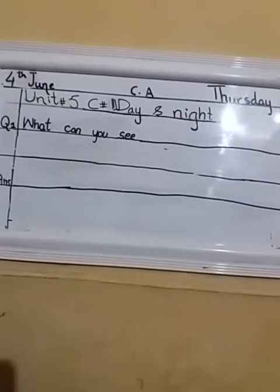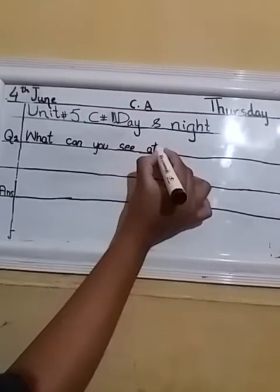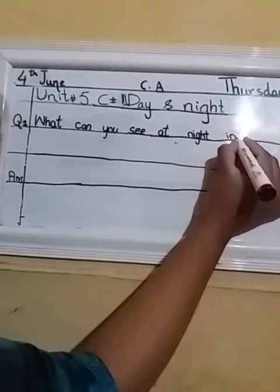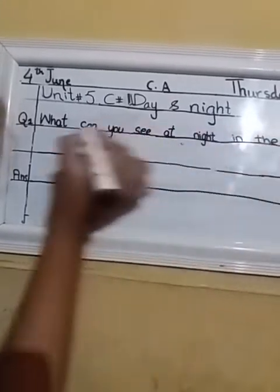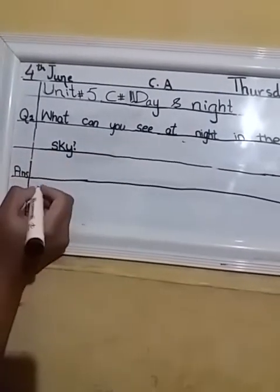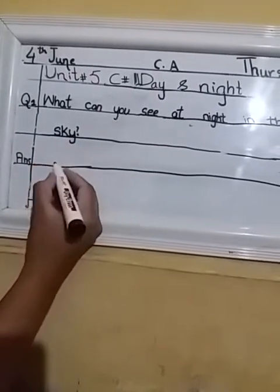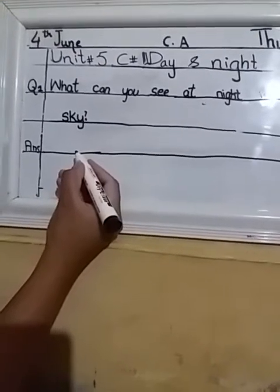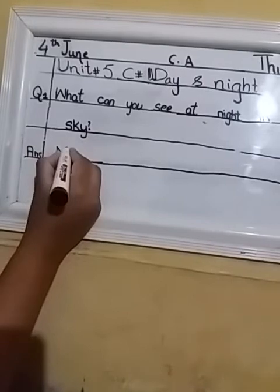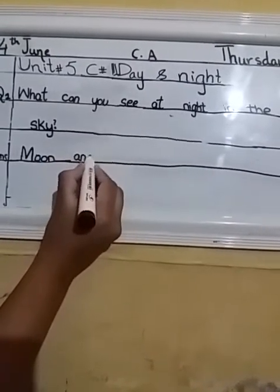Now let's move to the next question. The second question is: What can you see at night — n-i-g-h-t — in the sky? What can you see at night in the sky? This means: at nighttime, what do we see in the sky? In lecture number one we studied day and night thoroughly, so at night we can see moon and stars in the sky. We will write Moon with a capital M, because there is only one moon.